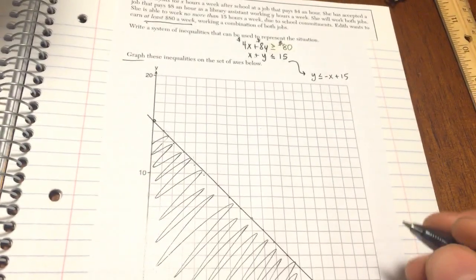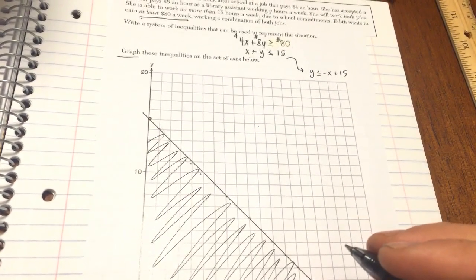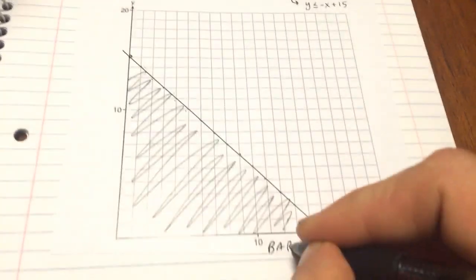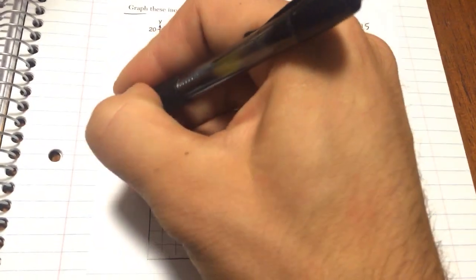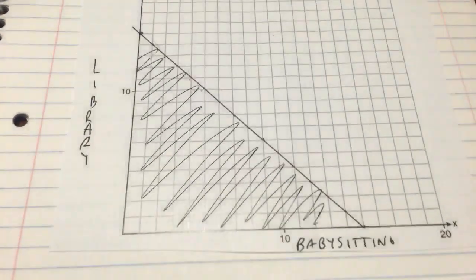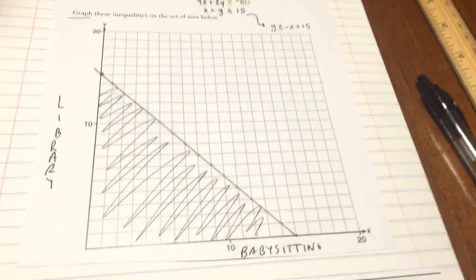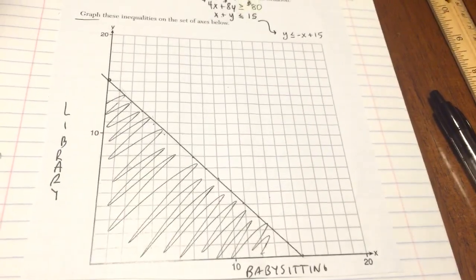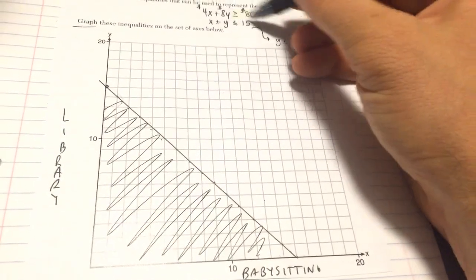I am using a solid line, and I am going to shade underneath it. This means any combination of — x is babysitting, and this is the library. Any point in this region satisfies the second inequality.